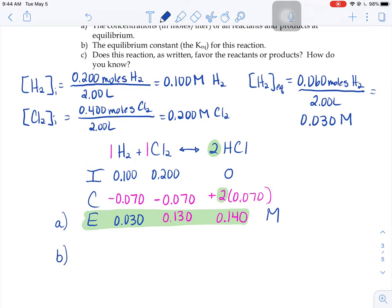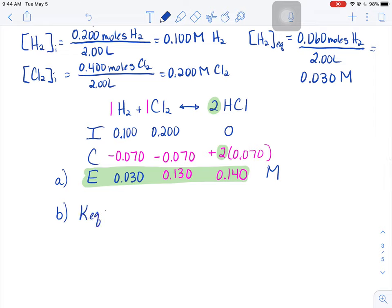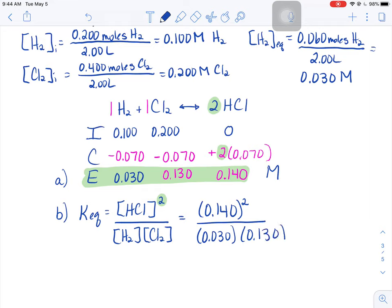Part b when we're finding the Keq we always do products over reactants. So we have hydrochloric acid as our product. We have to square that hydrochloric acid because of that 2 in the balanced equation. So the 2 from the balanced equation it shows up 2 times. Once in the change line and once in your equilibrium expression. Then we have our hydrogen and our chlorine both to the first power. Now we substitute in our values. Hydrochloric acid is 0.140. I have to square that over 0.030 and 0.130. When I go to plug that in my calculator, I'd get a value of 5.0.